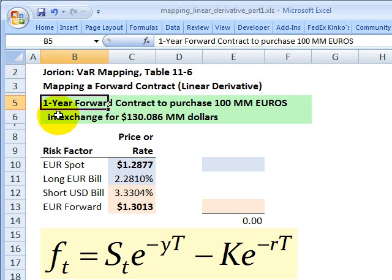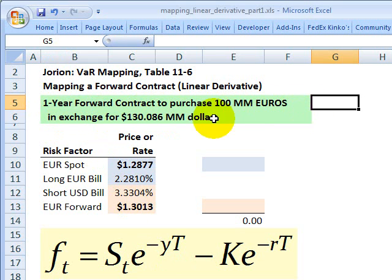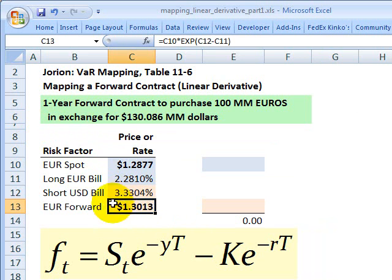Here's the example. In this case, it's a one-year forward contract to purchase 100 million euros in exchange for about 130 million US dollars. This is a forward currency contract. Here is the forward exchange rate. Recall the forward exchange rate gives us the ability to lock in that exchange rate in the future.